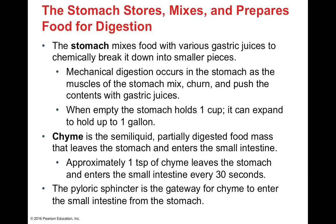Once food enters the stomach, it interacts with gastric juices involved in chemical digestion. We have both mechanical digestion — churning and mixing — and chemical digestion from enzymes breaking down food. The stomach holds about one cup when empty but can expand to hold up to one gallon. After interacting with stomach juices, food is now called chyme — a semi-liquid, partially digested food mass that will leave the stomach and enter the small intestines.